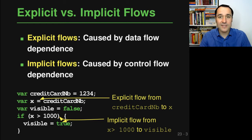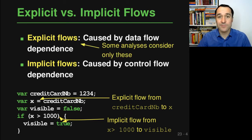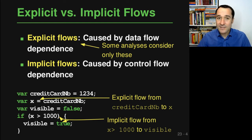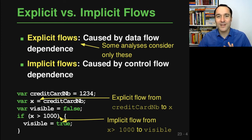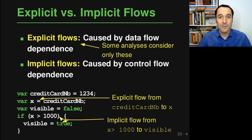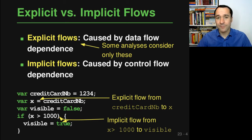Some analyses only check for explicit flows. The terminology differs — sometimes these are called taint analysis, sometimes information flow analysis. I recommend not relying on terminology alone, but always checking whether a given analysis tracks explicit flows only, implicit flows only, or both.